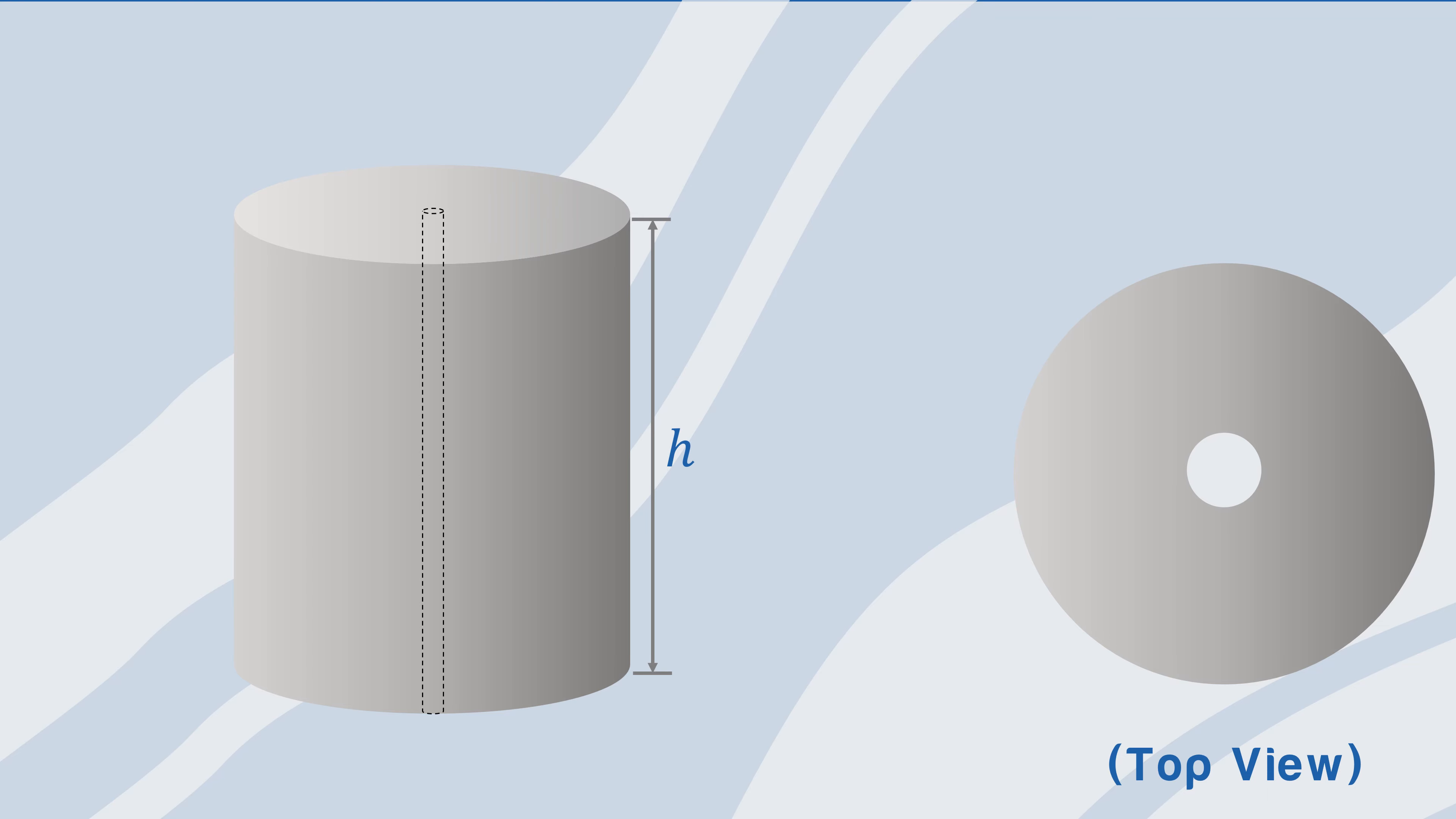This system shows the radial system of the reservoir, where Re is the reservoir's outer radius, Rw is the well radius, Pe is the reservoir's outer pressure, and Pwf is the well bottom-hole pressure.